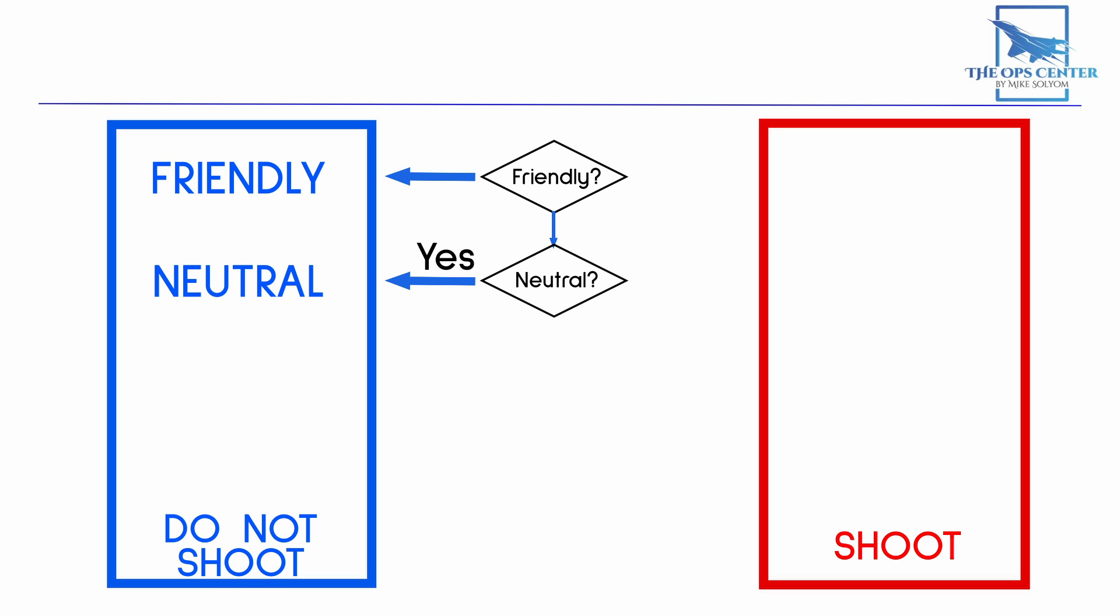Now what if we don't have neutral or friendly indicators? Things get a little more complicated. To be positively ID'd as an enemy, an aircraft cannot have any friendly or neutral indicators, and it has to have one of the following.